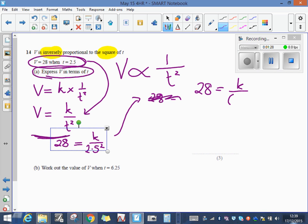If we want to work out what k is, I'm going to multiply both sides by 6.25.